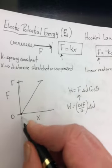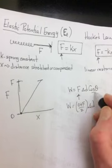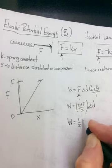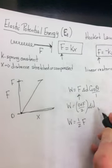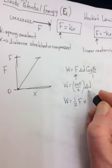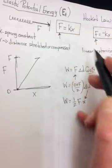And the cos theta, the F and the X for us, it'll be us pulling it. They'll be in the same direction. So this will be one. So we have W is equal to one half F. And my delta D is the distance that I've stretched it. So it's really just X. So the delta D becomes X.